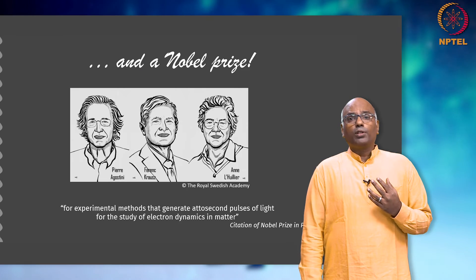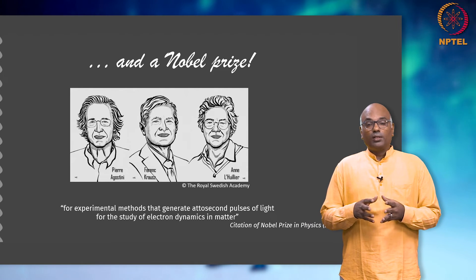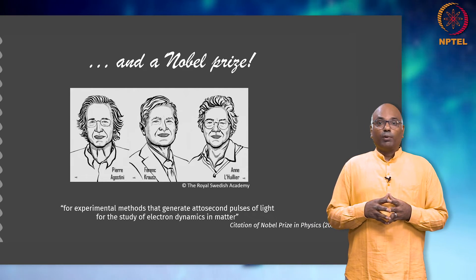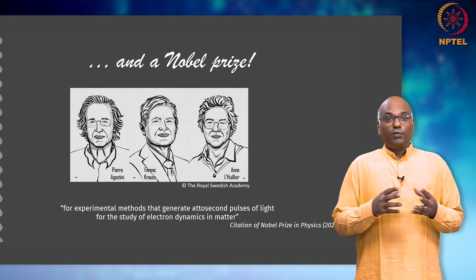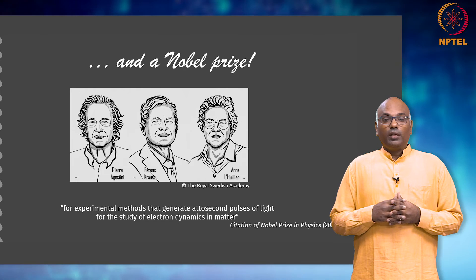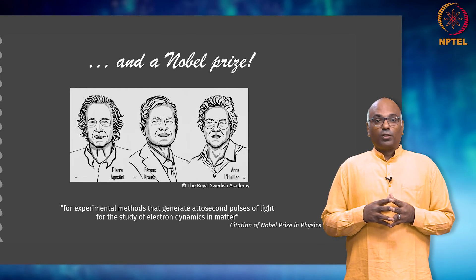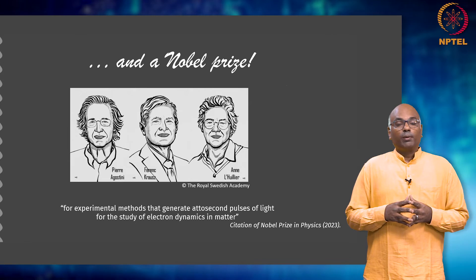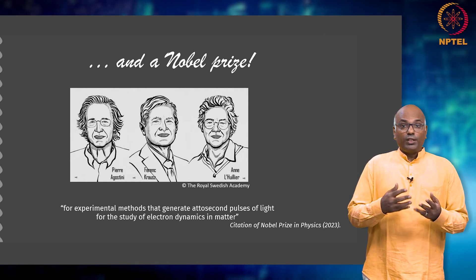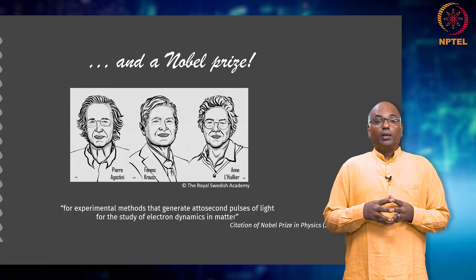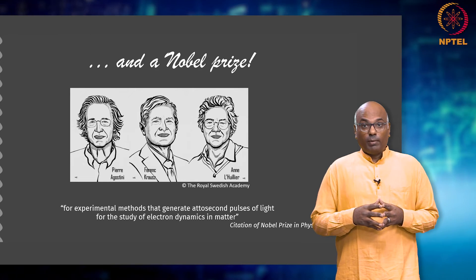It is therefore no surprise that the Nobel Prize in Physics for the year 2023 was awarded to three pioneers in this field: Professor Anne L'Huillier, Professor P. Agostini, and Professor Ferenc Krausz, for developing experimental methods to generate attosecond pulses of light, which are subsequently applied for the study of electron dynamics in matter.